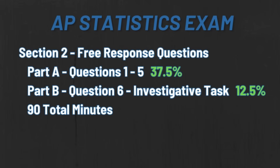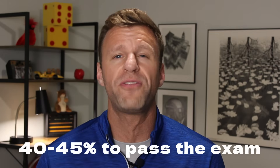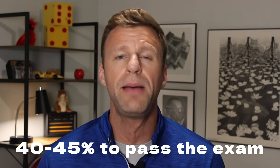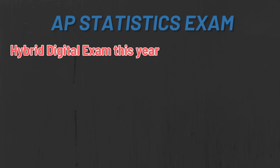Here's the scoring breakdown for the FRQs. The first five FRQs in total are worth 37.5% of your total composite score. Question six, all on its own, is worth 12.5% of your composite score. Some kids feel like they have to do something on question six, but remember — you really only need about 40 to 45% to get a passing score of a three on the exam. So if you end up not answering question six at all, it's not going to destroy your chances of passing the test.